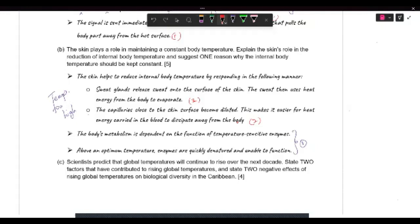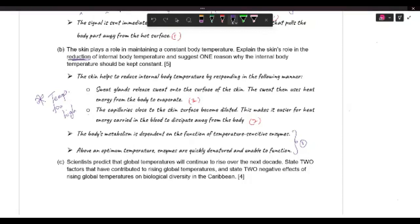So we have a question saying that the skin plays a role in maintaining constant body temperature. And we're being asked to explain the skin's role in reduction of internal body temperature. So that means we're talking about what happens if the temperature is too high. So your body's going to work with your skin to bring that temperature back down. And we have to suggest why internal body temperature should be kept constant.